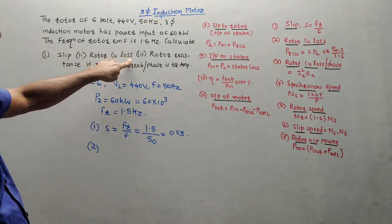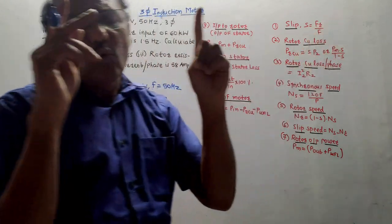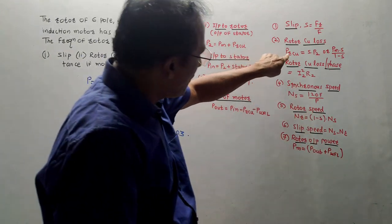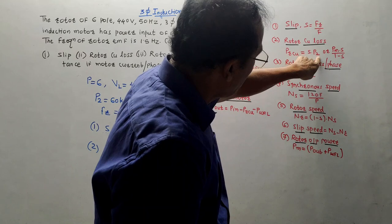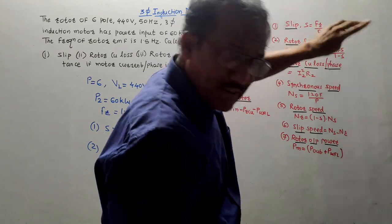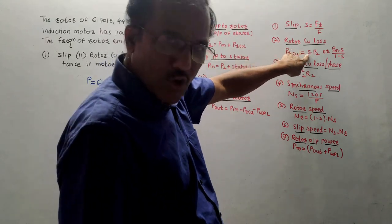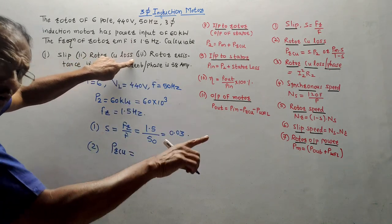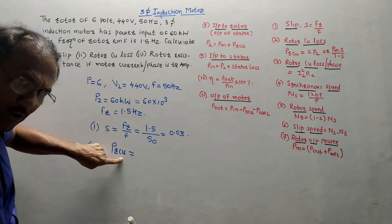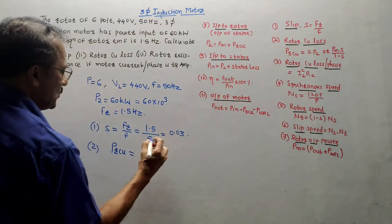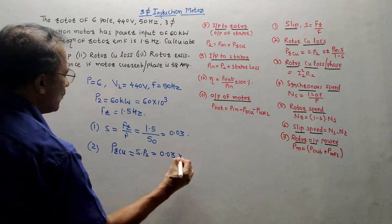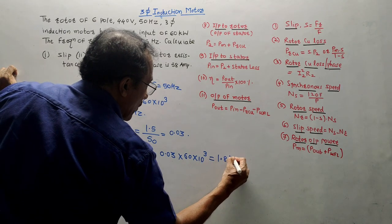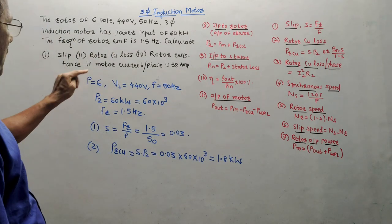Second part: rotor copper losses. Rotor copper losses are given by the second formula. There are two major types of losses in this system: first is the copper losses and second is the windage and frictional losses. For copper losses, we have two formulae: one is S × P2 and the second is PM × S / (1 − S). PM is not given in the question, so I use the first formula. Rotor copper loss, PRCU = S × P2 = 0.03 × 60 × 10³ = 1.8 kilowatt.